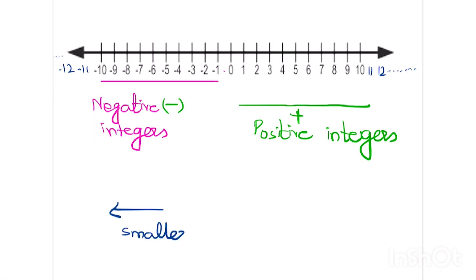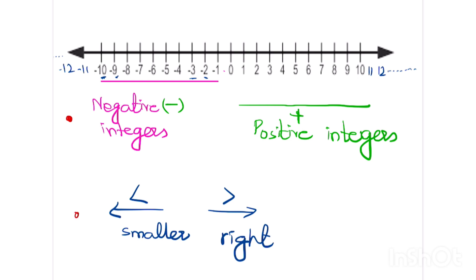Here is one more important thing: the numbers on the left side are smaller compared to the numbers on the right side. If a number is lying on the left of the number line compared to another number on the right side, it must be the smaller one.